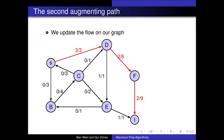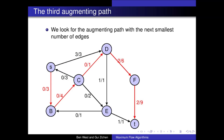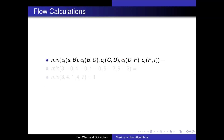Again we update our graph to show the flow now being pushed along each edge. We look for the next shortest augmenting path and find a path of length 5, comprising of edges SB, BC, CD, DF, and FT. Again we calculate the flow value that can be pushed along this path. We find it has residual capacities of 3, 4, 1, 4, and 7. Therefore we can push 1 unit of flow down this particular path.